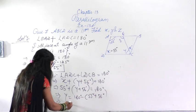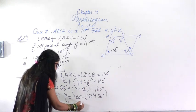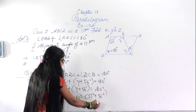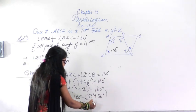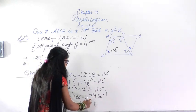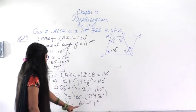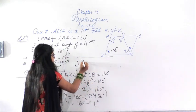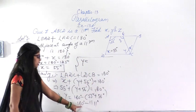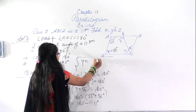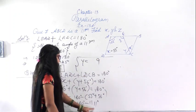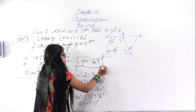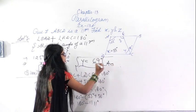Now we have to find the value of Y. So Y equals 180 degrees minus 55 degrees minus 56 degrees. Adding 55 and 56 gives 111 degrees. So Y equals 180 minus 111, and the value of Y is 69 degrees.